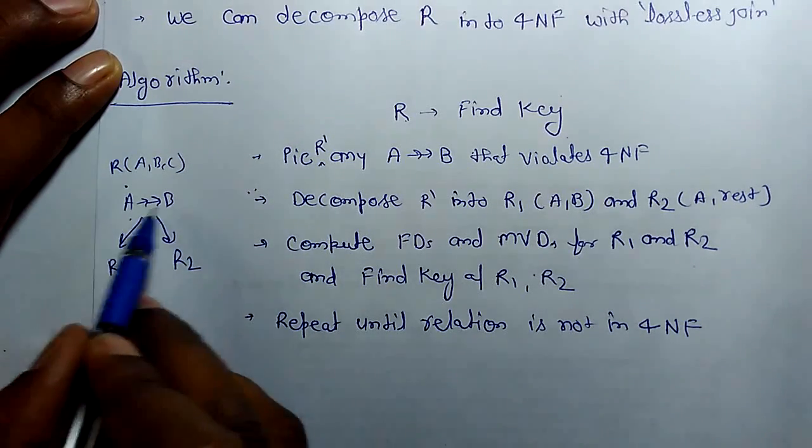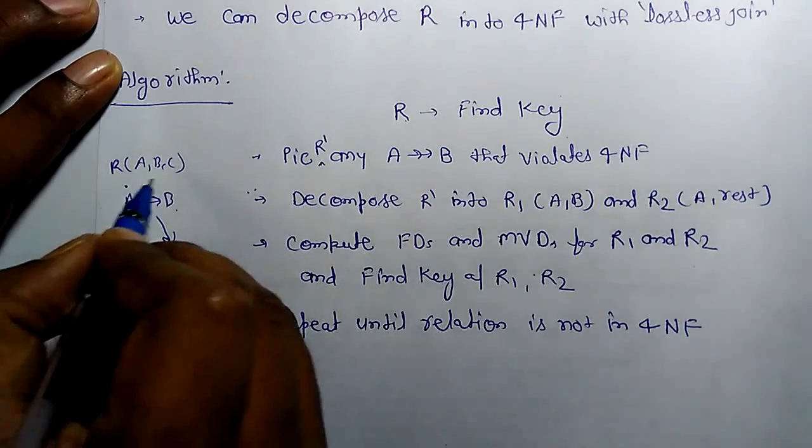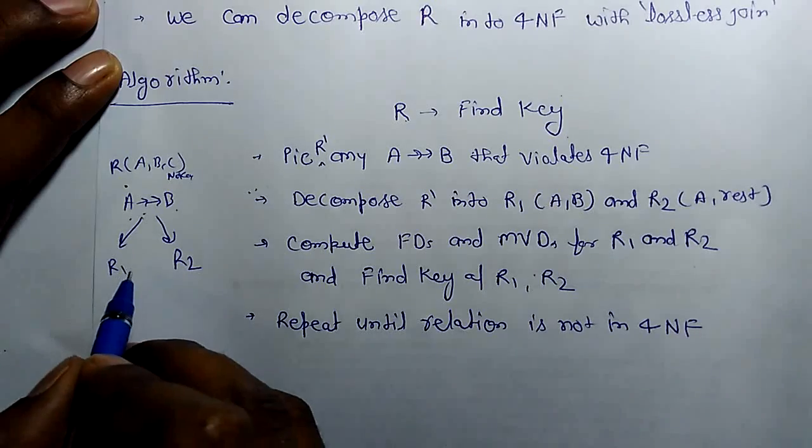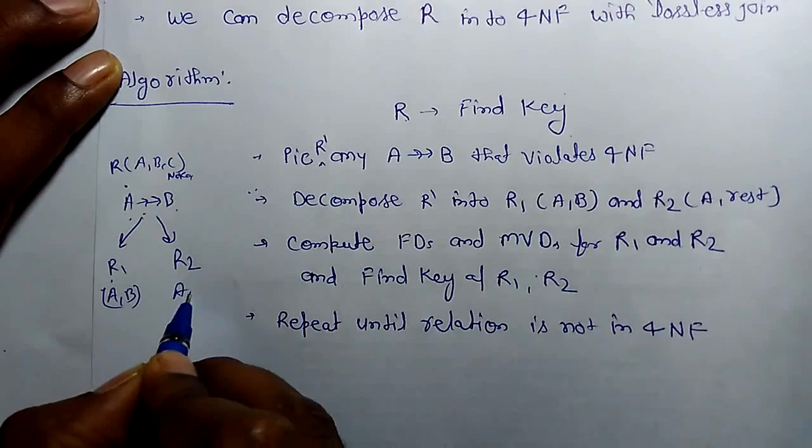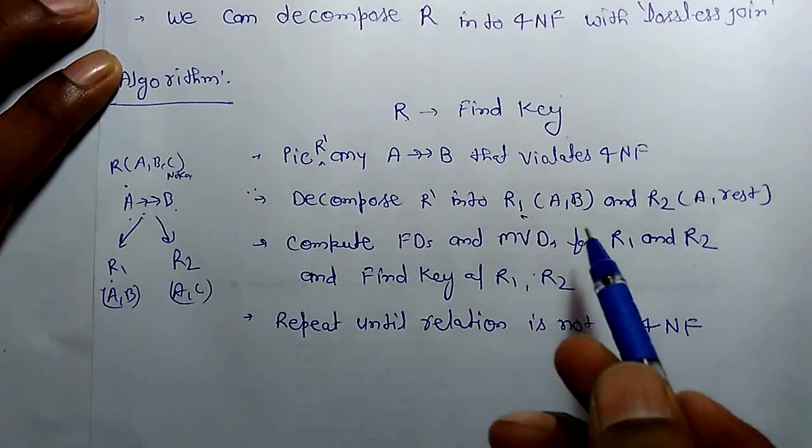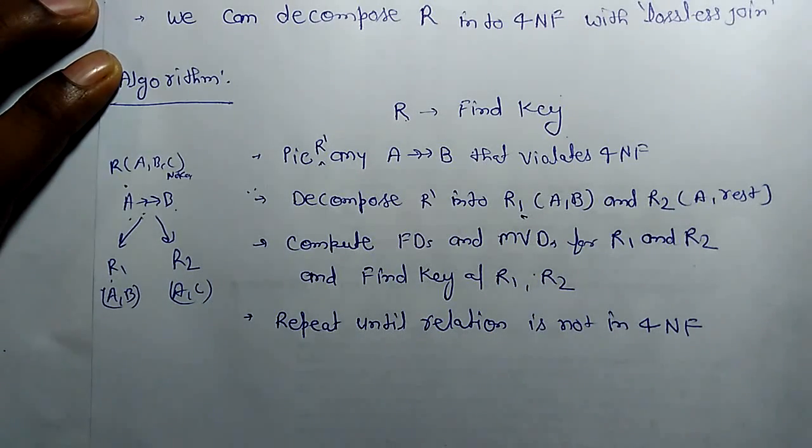there is no key here. So R1 and R2 in the decomposition would be in this form. R1 will be A and B, and R2 will be A and remaining attributes which is C.